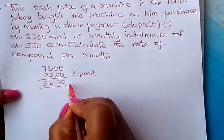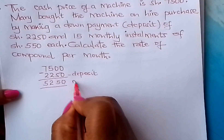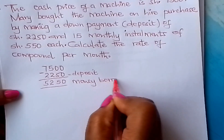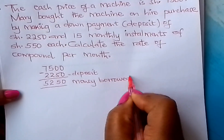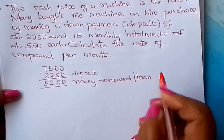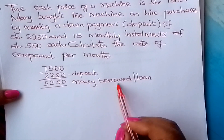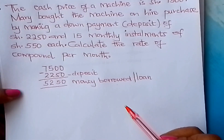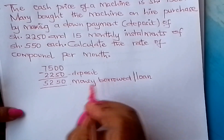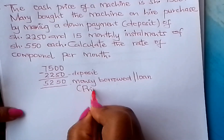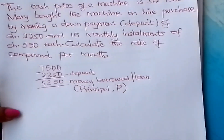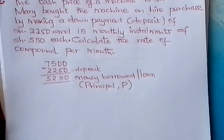Now that she carries this machine, this is money borrowed. Money borrowed — it's like a loan, learner. This money, money borrowed, is called the principal. This is the principal, the P — the one that we symbolize with a P.